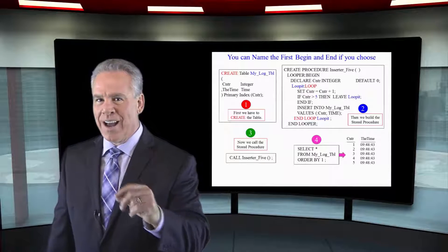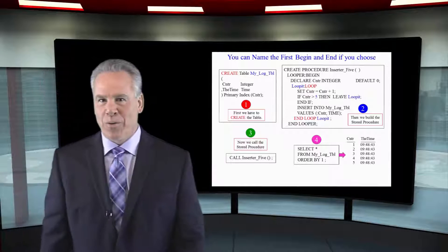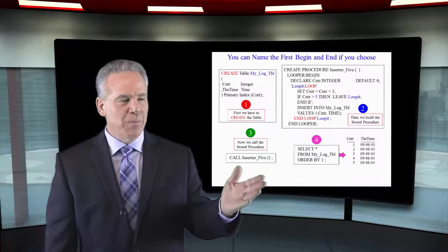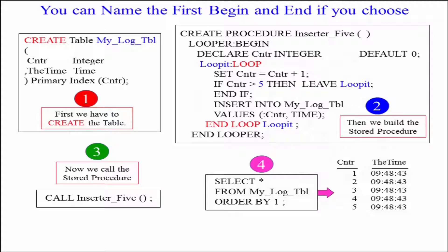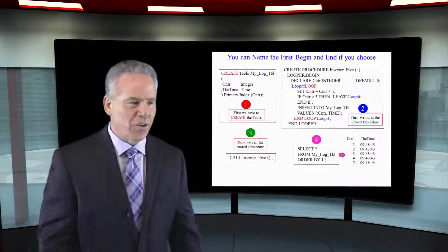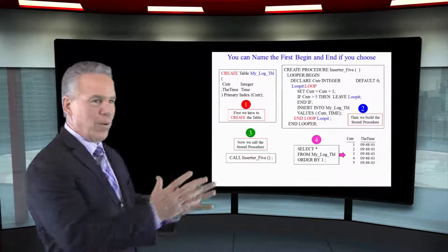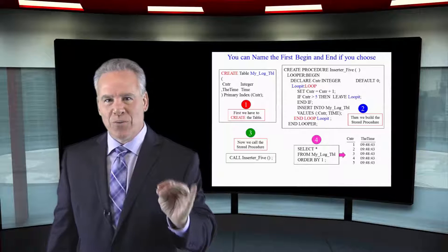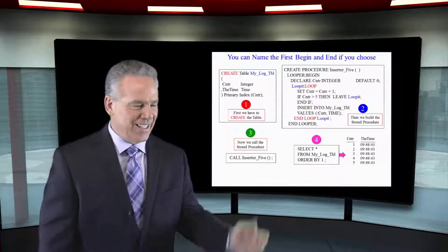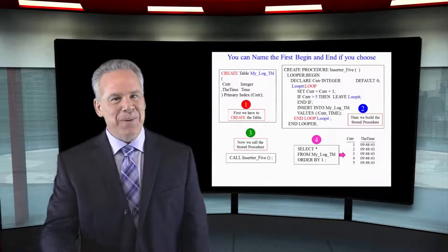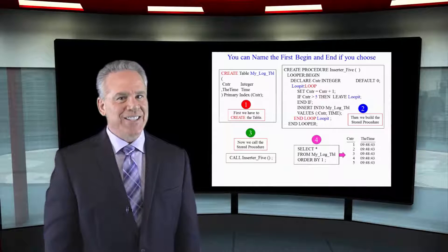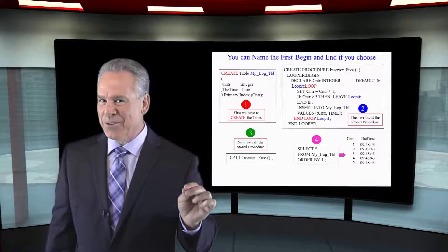Let's review that one more time. One, we make sure the table already exists. I created it. Number two, we build that stored procedure. And notice in the keywords red, the words loop and end loop. That's the way loops are done, or at least one technique for them. Once I've created the stored procedure, I just call inserter five, open paren, close paren, and the stored procedure runs. When I check on it a little later and select everything from my table, I notice there are five rows in it because I set that counter. And I said, you run this each time and you keep looping until that counter is greater than five.